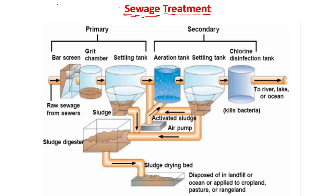First, let's discuss what sewage is and how it is formed. Sewage is the wastewater which comes from our houses, industries, hotels, and restaurants. This used water is highly contaminated and known as sewage. It contains a lot of toxic materials, chemicals, organic waste like human feces, and a lot of disease-causing microbes.